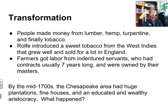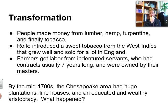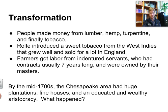Transformation started to occur. How did people make their money? Lumber — though the forests were decimated. Hemp. Turpentine. And finally, tobacco. It was John Rolfe — who had married Pocahontas, who incidentally died of disease — who introduced a sweet tobacco that was all the rage in England. It came from the West Indies, grew really well in Virginia, and sold for a lot of money, so tobacco really started to take off. Where did farmers get their labor? It was indentured servants coming over on ships, with contracts usually about seven years long. They were owned by their masters, so life was not easy — it was essentially slavery.